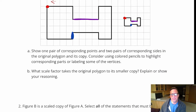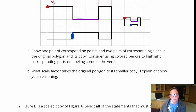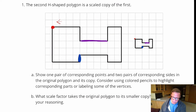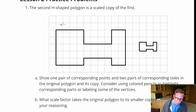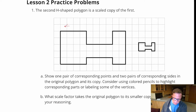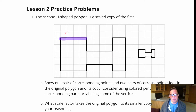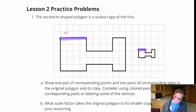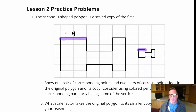Question B says: what scale factor takes the original polygon to its smaller copy? One thing I noticed right off the bat — if we look at that part of that polygon, that part corresponds to this part. In the original, it's four square units across, and in the scaled copy, it's one.